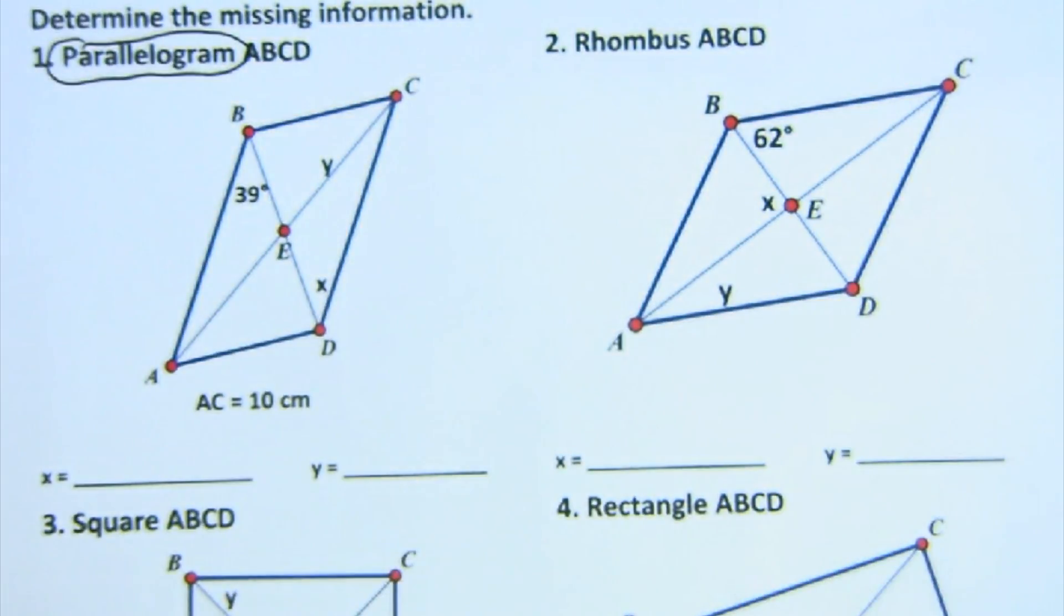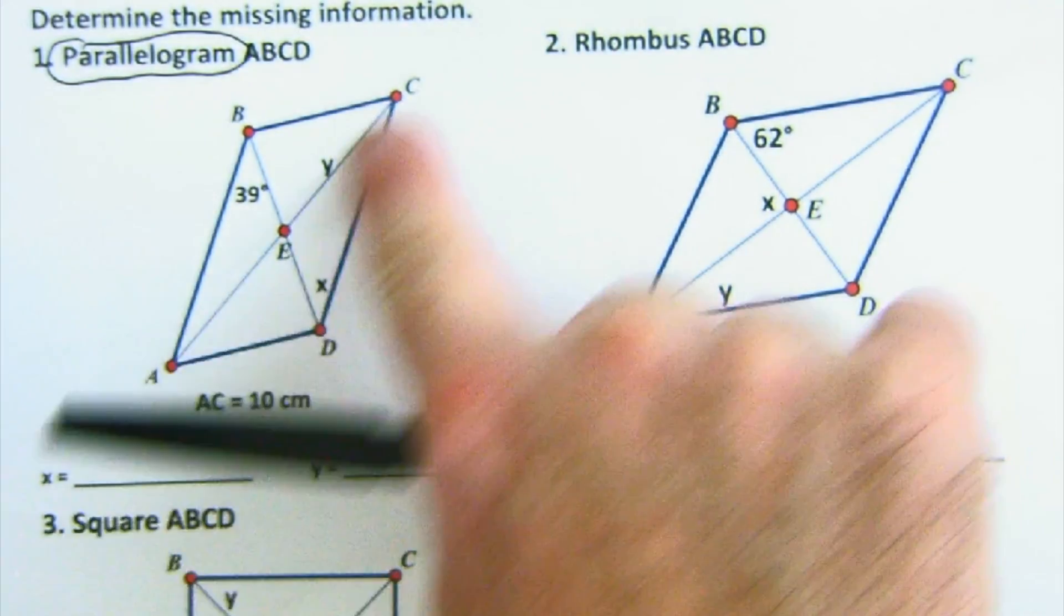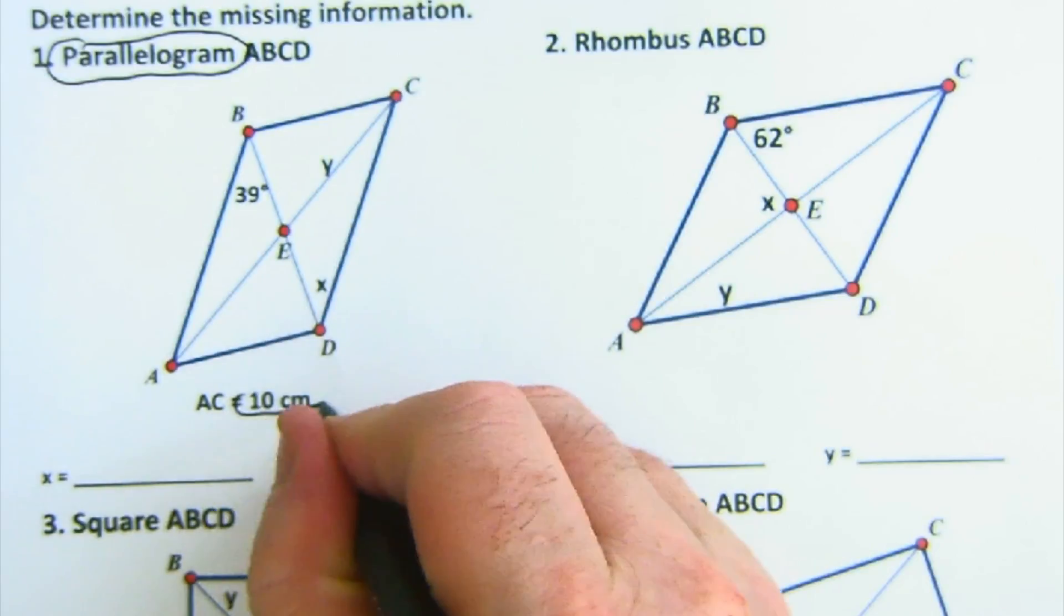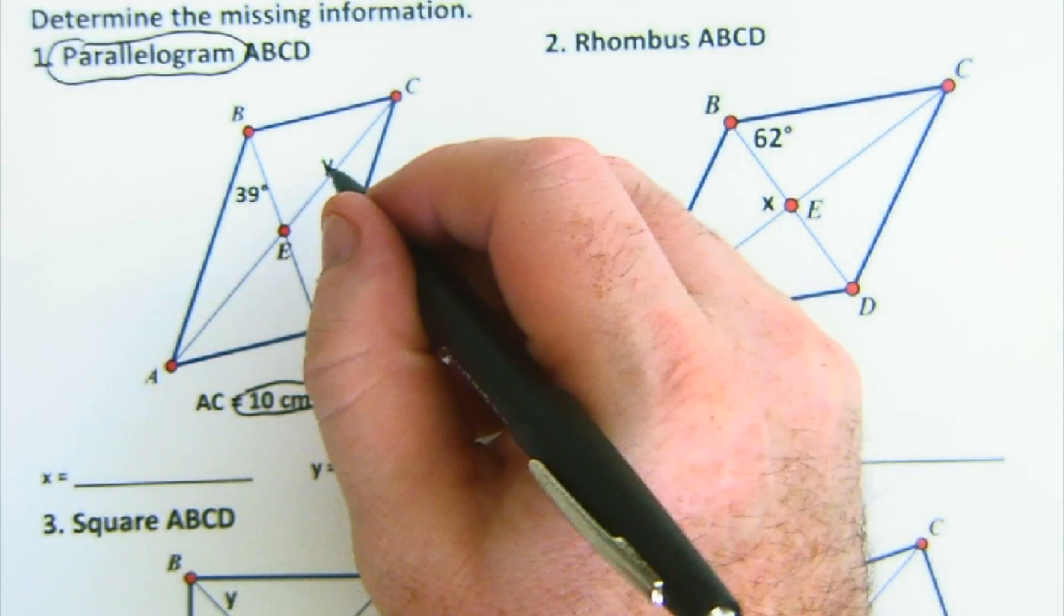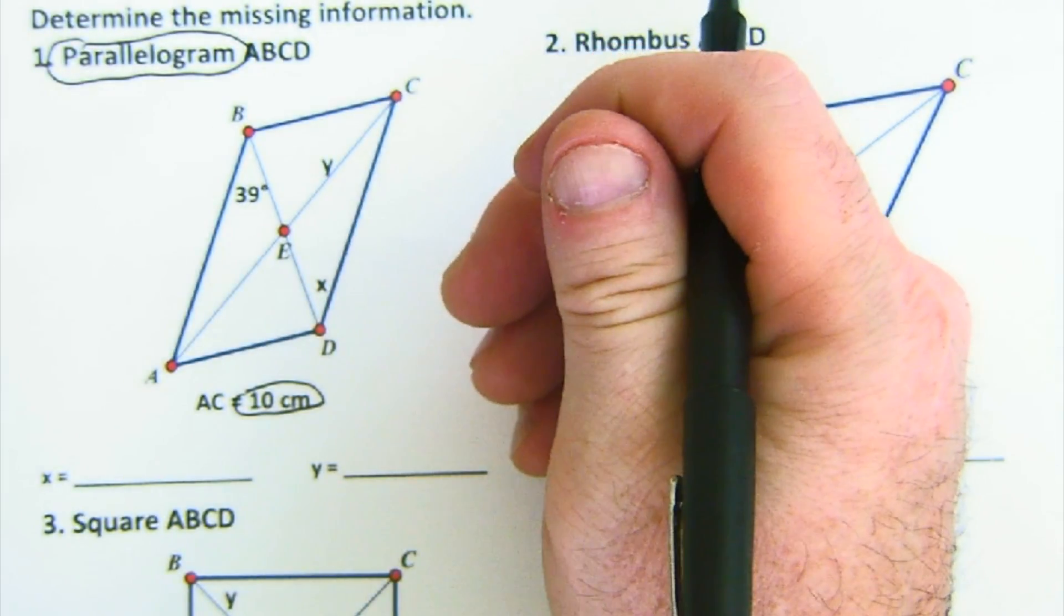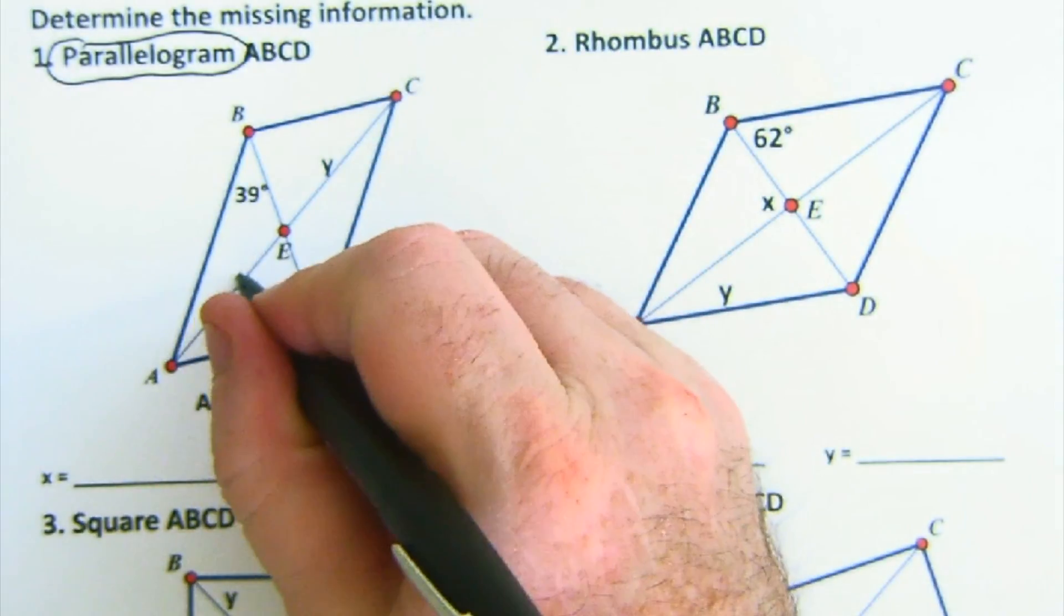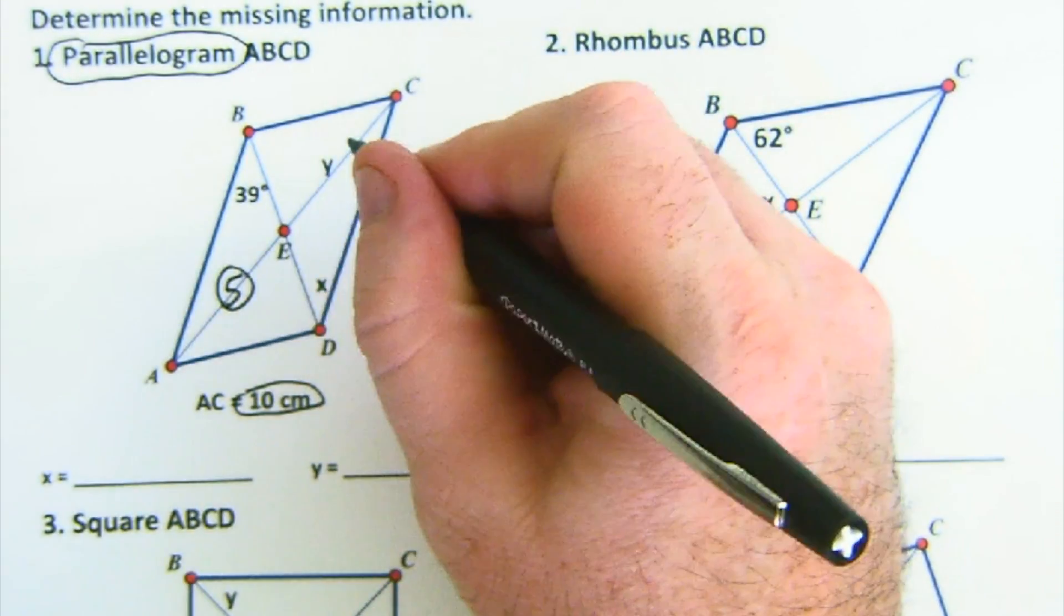So for instance, if this side, or this diagonal AC is 10 cm, I'm aware that diagonals get cut in half, so that would make this five here and that would make this five here as well. So this would be five centimeters.